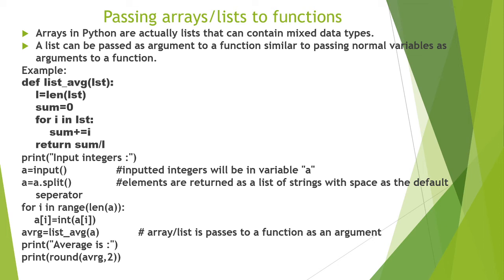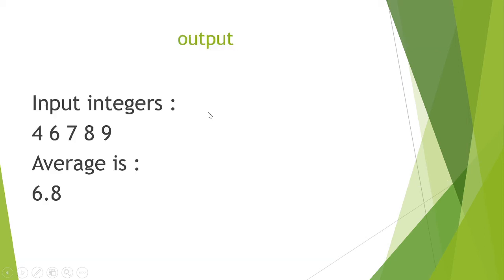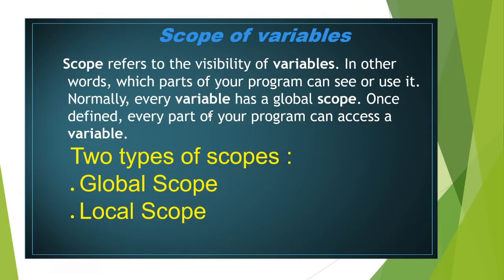When passing a complete list to a function, you take the list from the user and pass it as an argument when calling the function. The argument is a list containing heterogeneous values of different data types. Using the index value, you can access each and every element of the list inside the function.